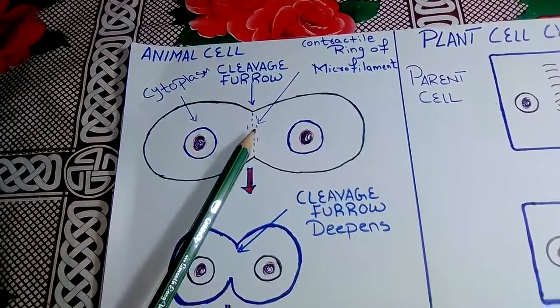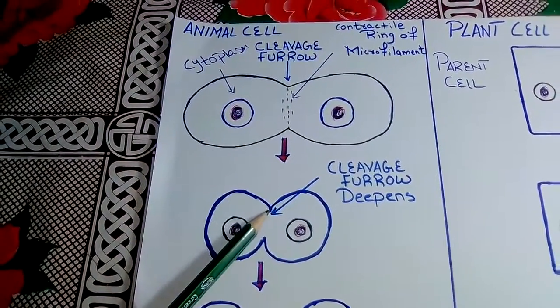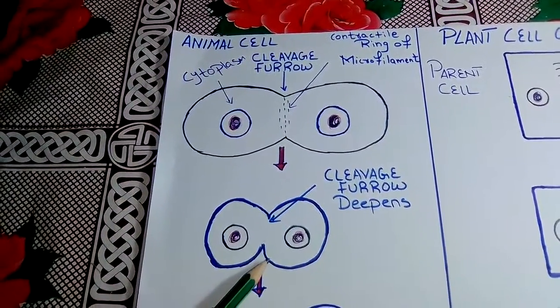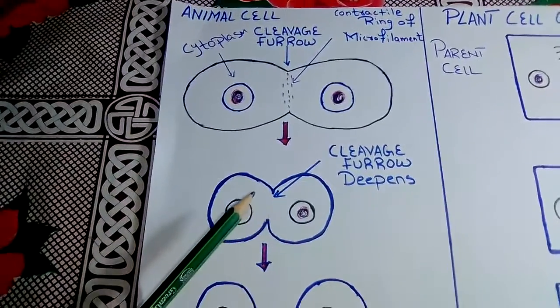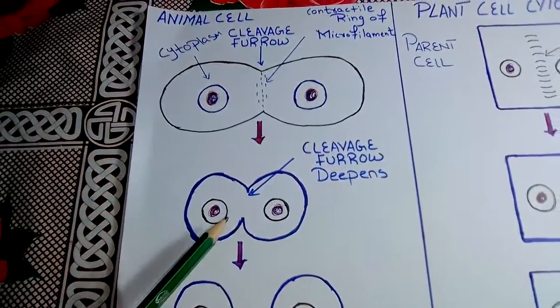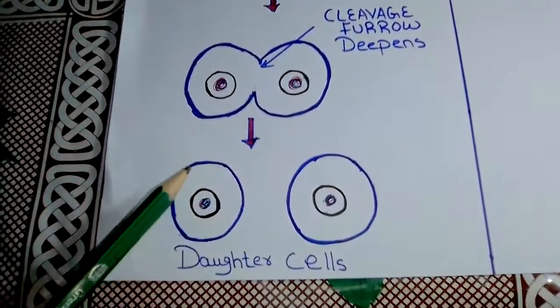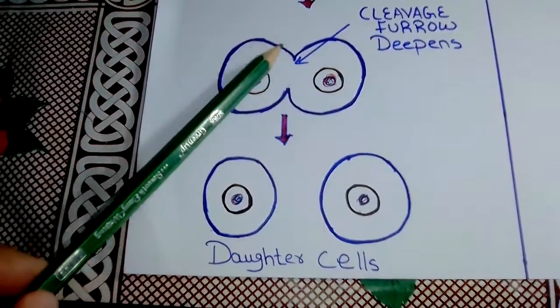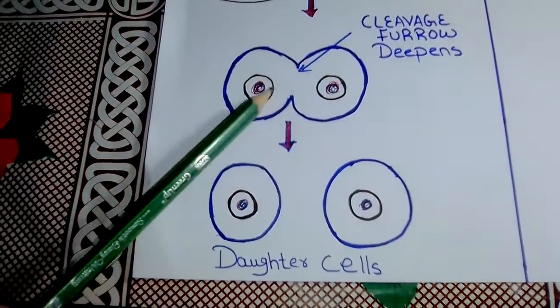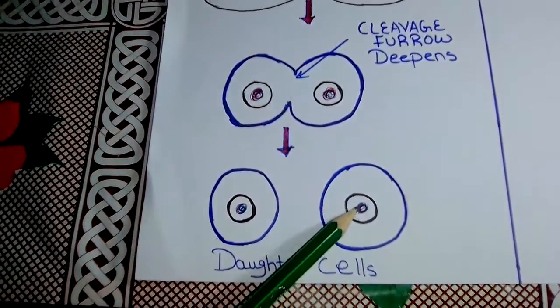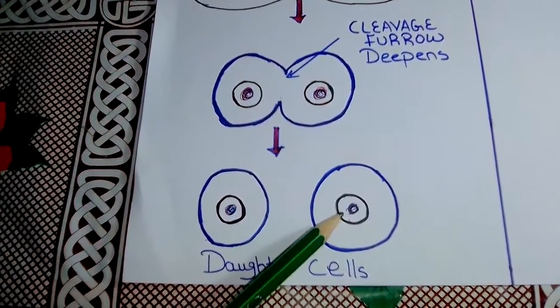Now the cleavage furrow deepens, as you can see in the diagram, and eventually pinches the parent cell into two daughter cells.